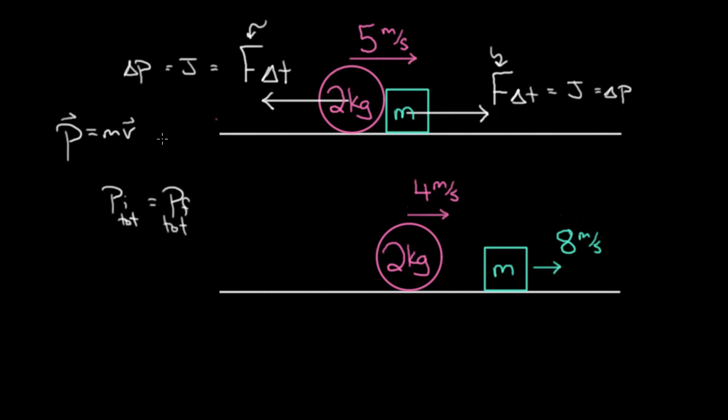So what I'm saying is that p initial total has to equal p final total. So only the pink ball had momentum initially, so it had two kilograms times five meters per second of momentum. To start with, the green cube had none, so this has got to equal.